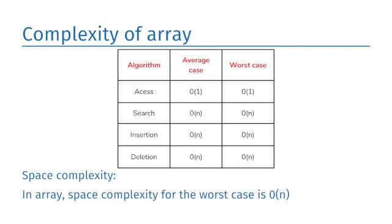Complexity of array. Average case of access is O of 1. Worst case of access is also O of 1. Average case of search is O of n. Worst case of search is O of n. And it is the same for insertion and deletion. Space complexity: in array, space complexity for worst case is O of n.